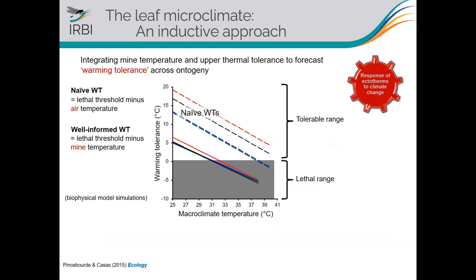This framework exists and is quite simple. It consists of computing the warming tolerance of different stages and species: warming tolerance is simply the difference between the thermal limit and the environmental temperature — just a subtraction. What most people have done up to now is use air temperature as a proxy for what insects are experiencing. This is what we call the naive approach of computing warming tolerance.